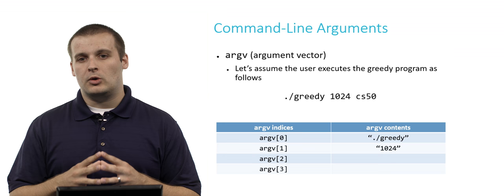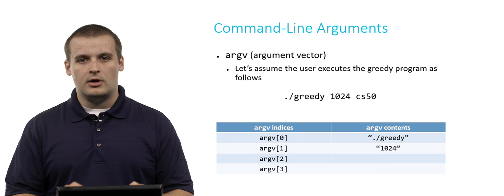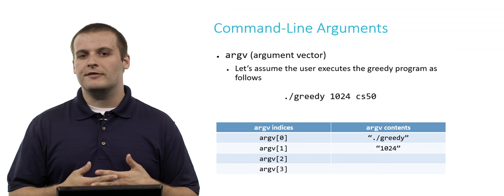So argv 1's contents are the string 1, 0, 2, 4, consisting of those four characters. It's as if the user typed 1, 0, 2, 4 as individual letters or characters.